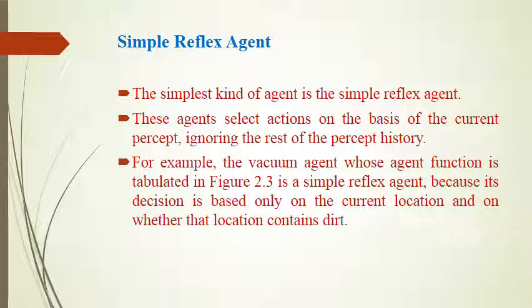The simplest kind of agent is a simple reflex agent. These agents select actions on the basis of the current percept, ignoring the rest of the percept history. There is no concern for percept history in a simple reflex agent — it is only responsible for current perceptions. The vacuum agent is an example: its decision is based only on the current location and whether that location contains dirt.